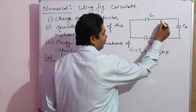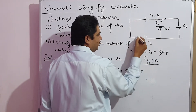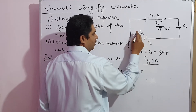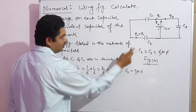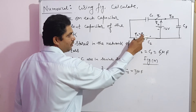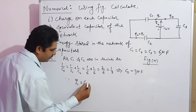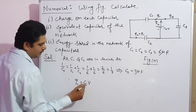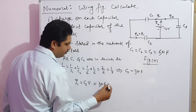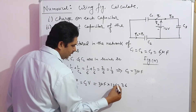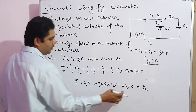Let the charge coming out from the battery be Q. It is divided into two parts: Q1 through capacitor C1 and Q2 through capacitor C2. Since C1 and C2 are in series, Q2 equals Q1. Therefore, Q1 equals Cs into V equals 3 microfarad into 12 volt equals 36 microcoulombs, and Q2 also equals 36 microcoulombs.